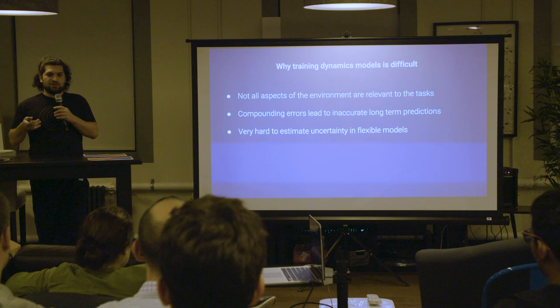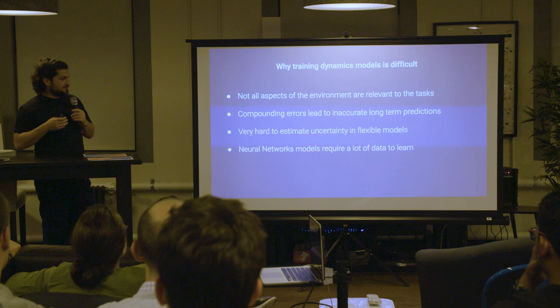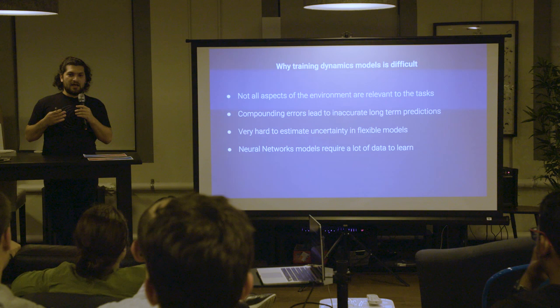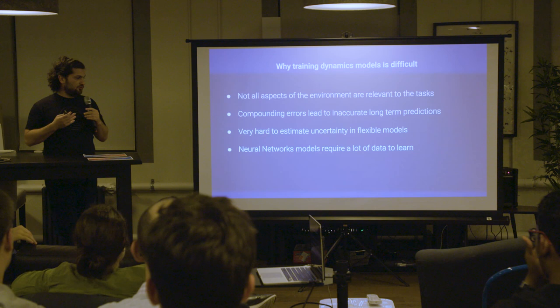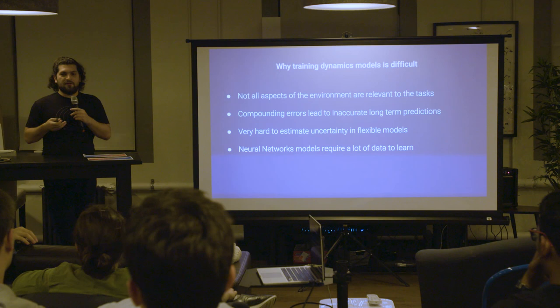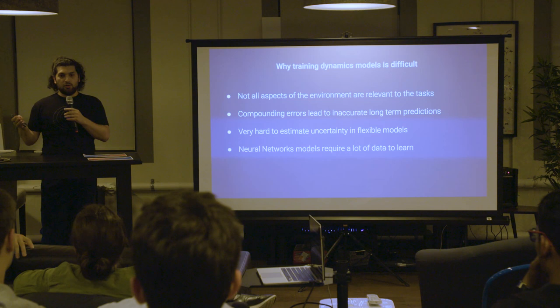It's also very hard to estimate uncertainty for flexible models, which is a general problem with neural networks — and we usually want to use neural networks because the dynamics are very complicated. In terms of sample efficiency, although model-based RL sounds like it should be more sample efficient, in practice learning a very accurate model requires a lot of data. If getting an accurate dynamics model requires more data than a model-free algorithm needs to learn a policy, then the model-based approach will never be more sample efficient. There's a gray area of whether it's harder to learn the dynamics or whether it's easy to learn the policy and you don't need a model.